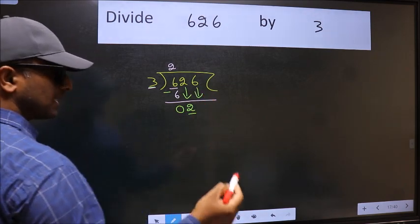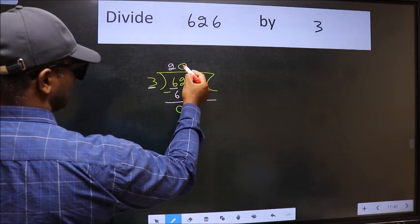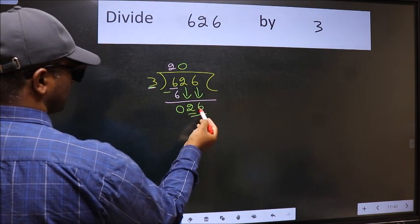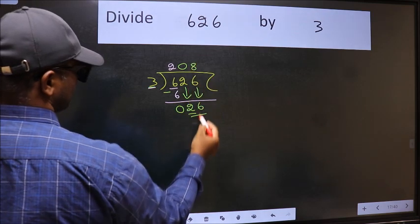And the rule to bring down the second number is we should put 0 here. Then only we can bring down this number. Now 26. A number close to 26 in the 3 table is 3 times 8 equals 24.